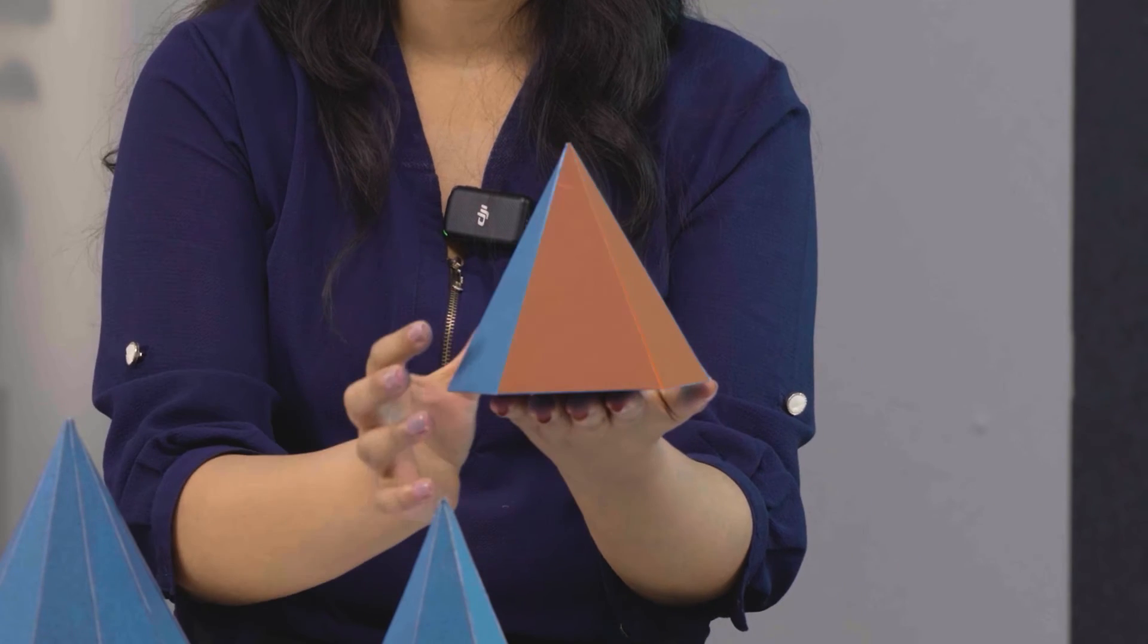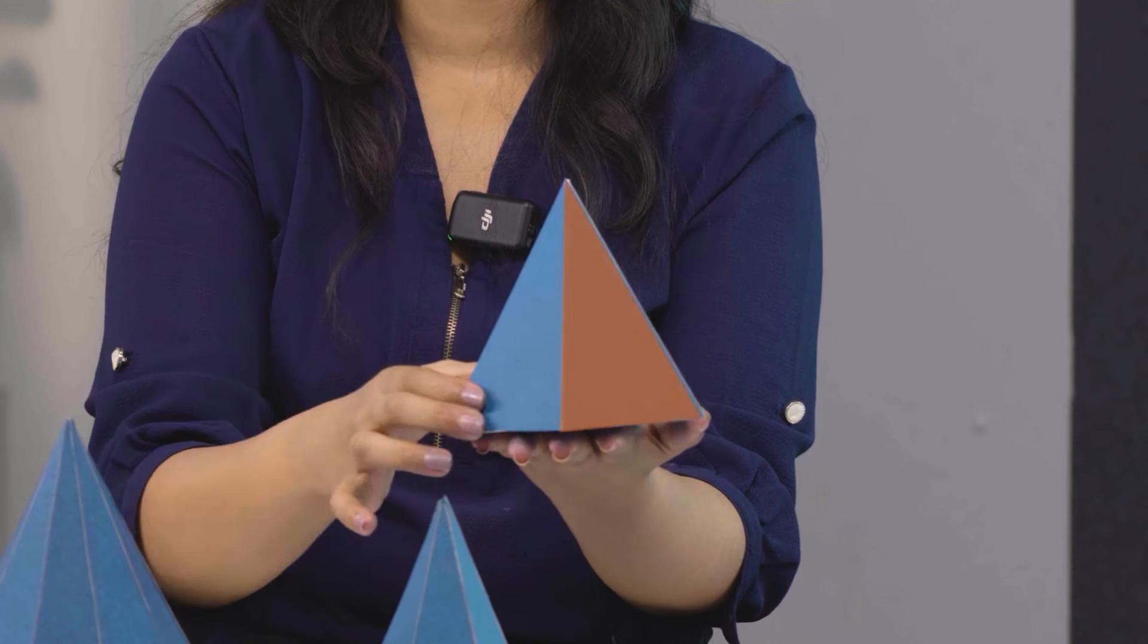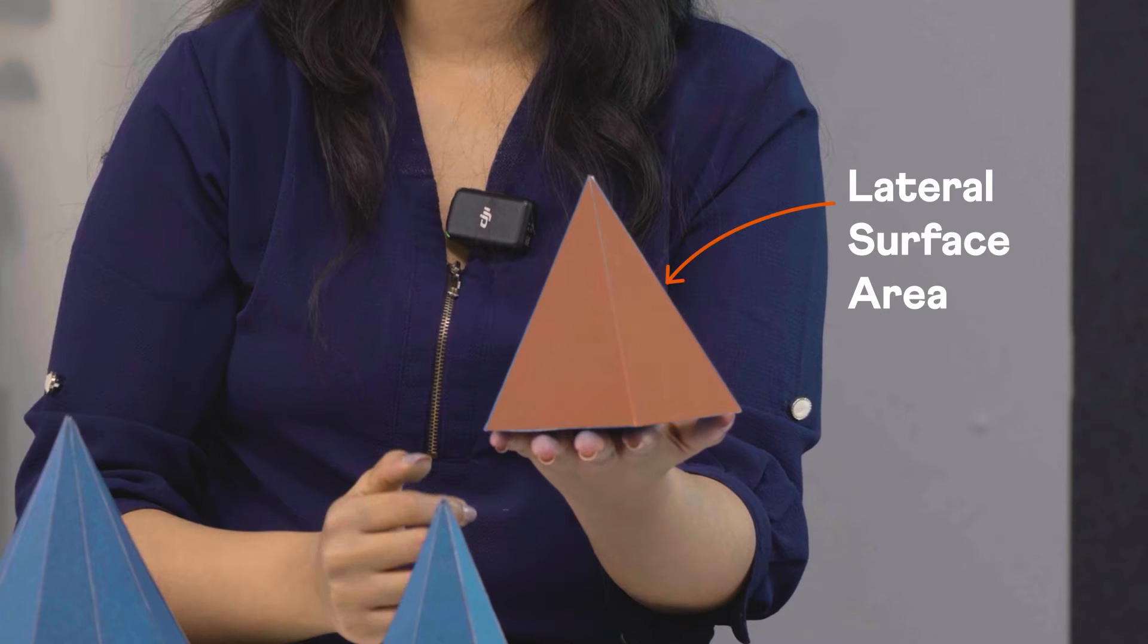By the way, the combined areas of all these slanted faces is called the lateral surface area. Can we arrive at a formula to find it?